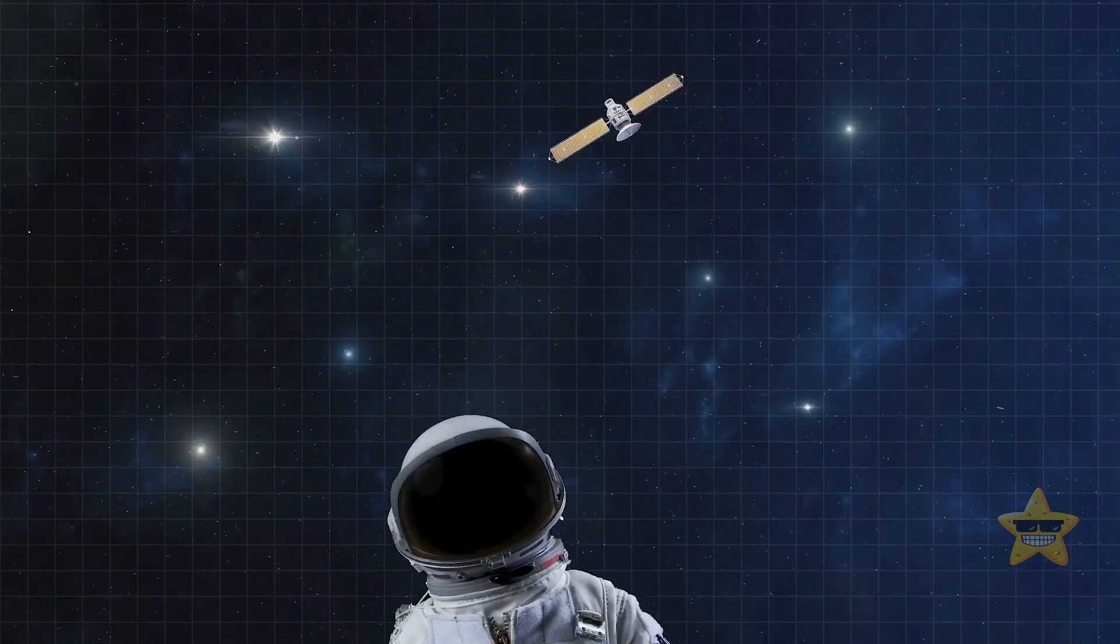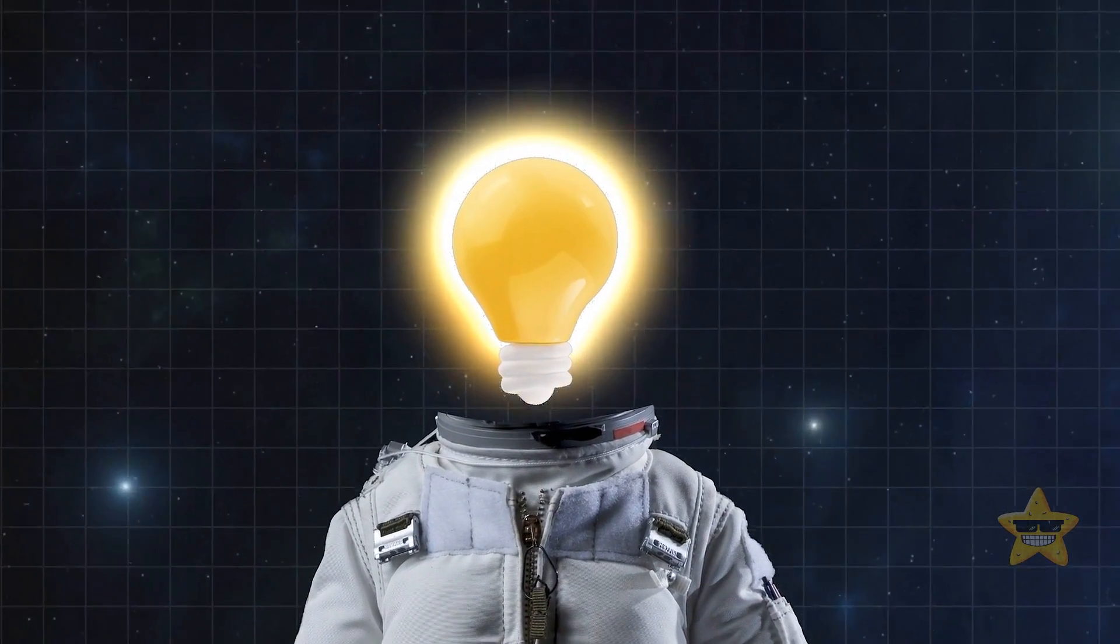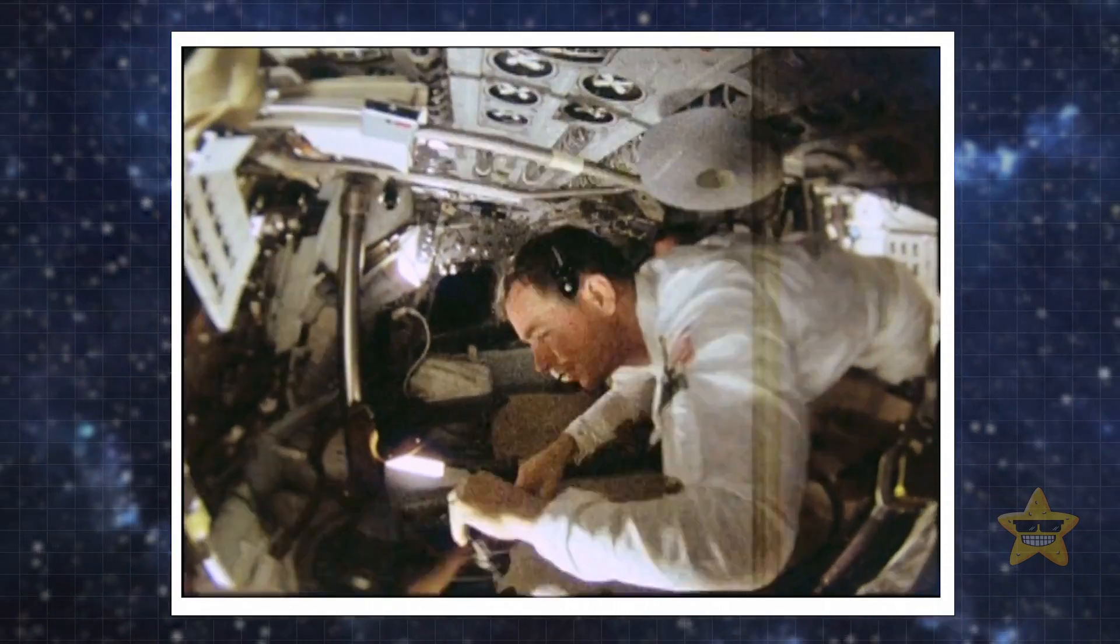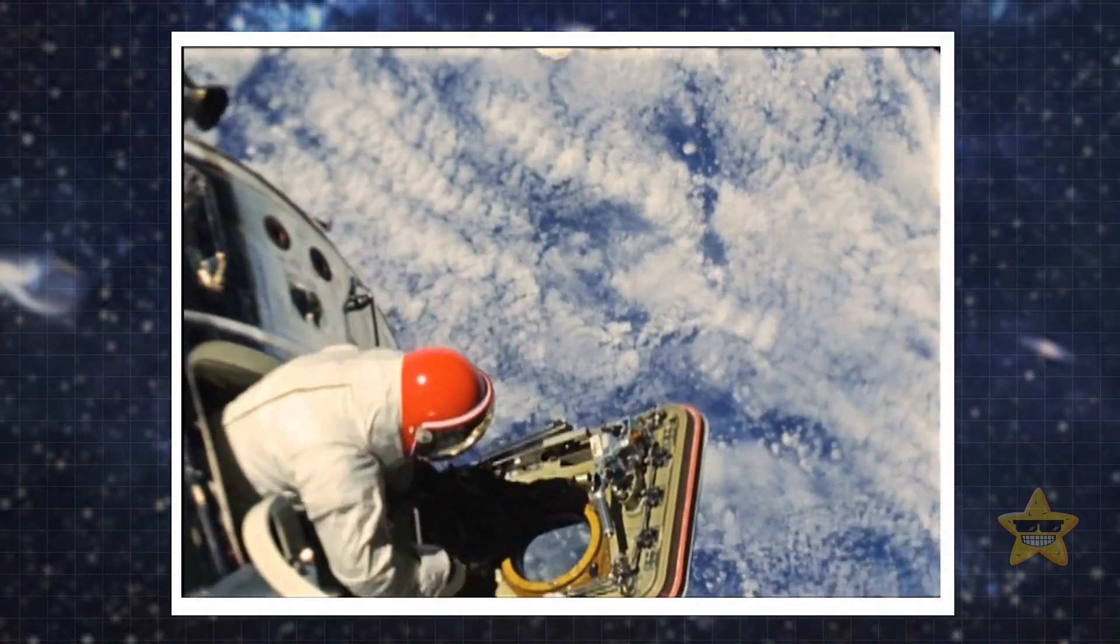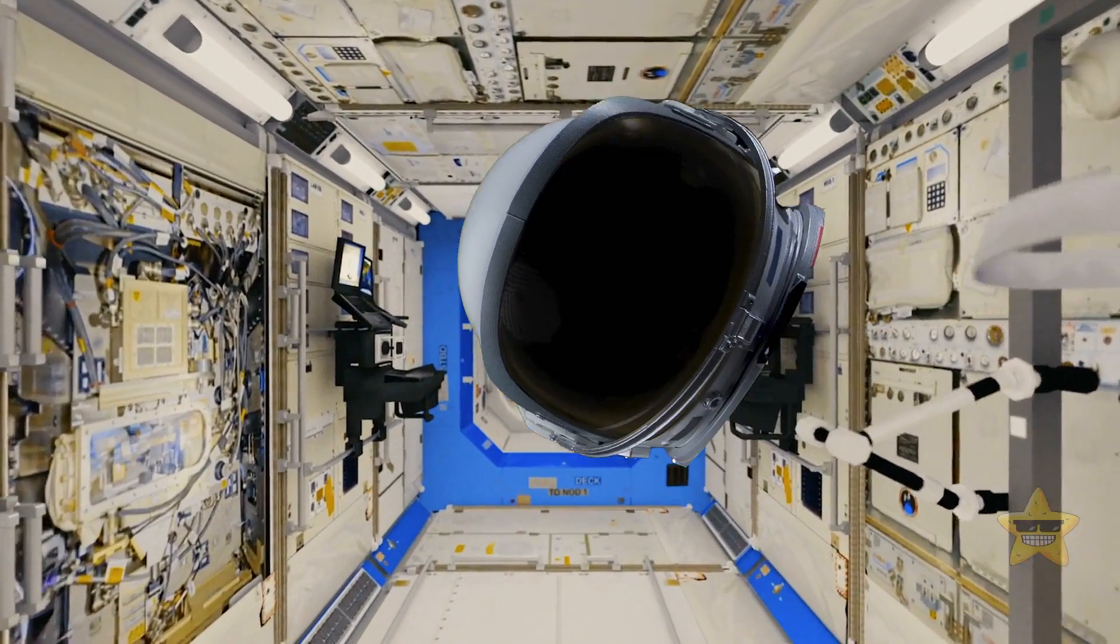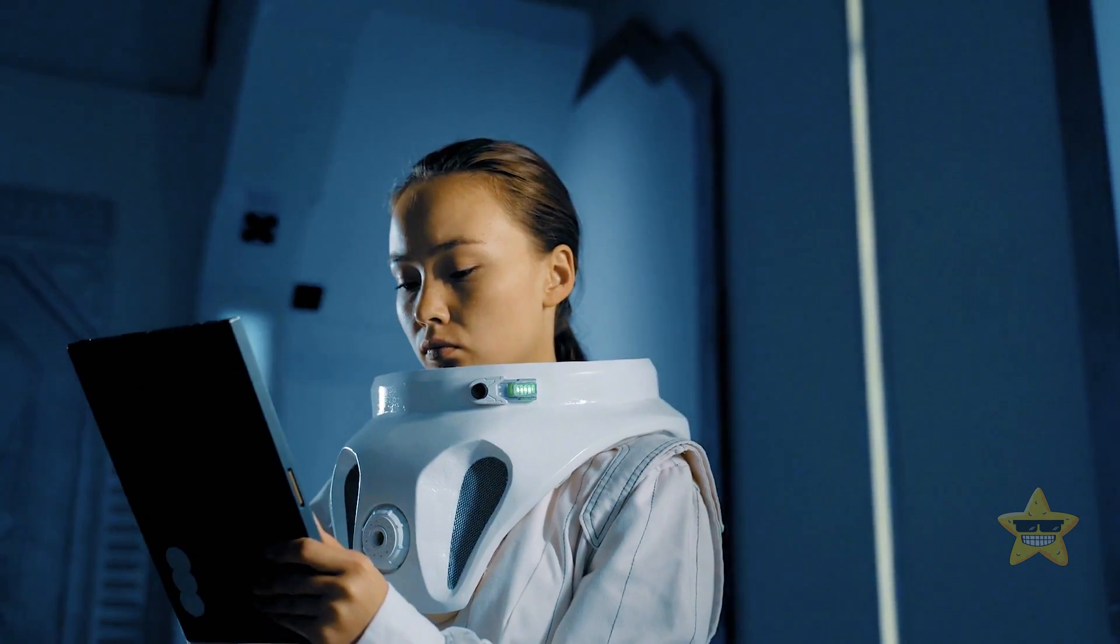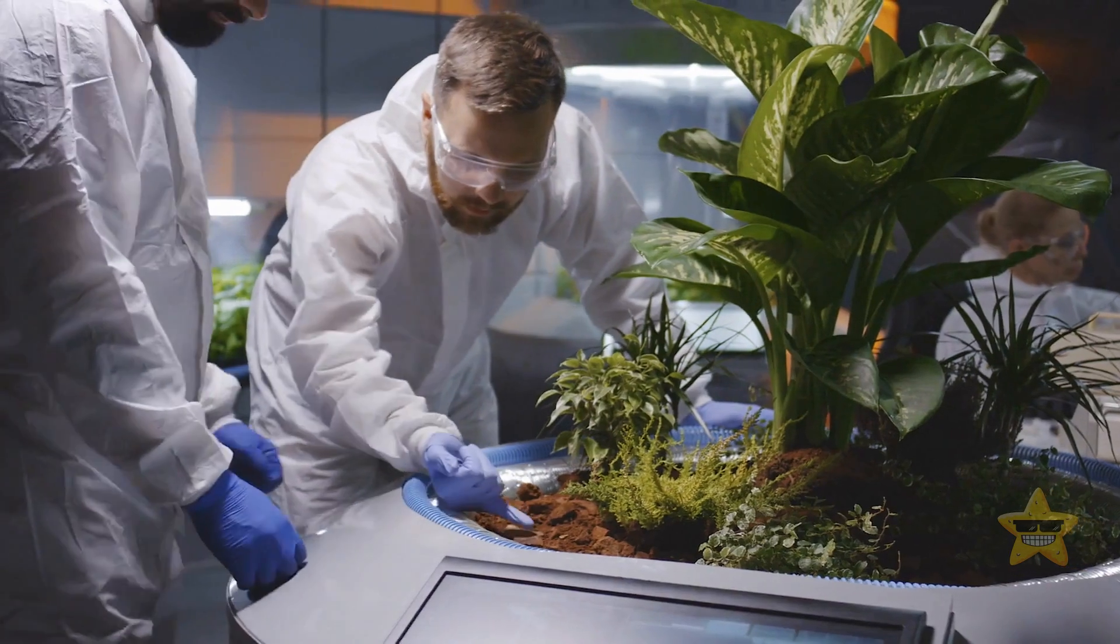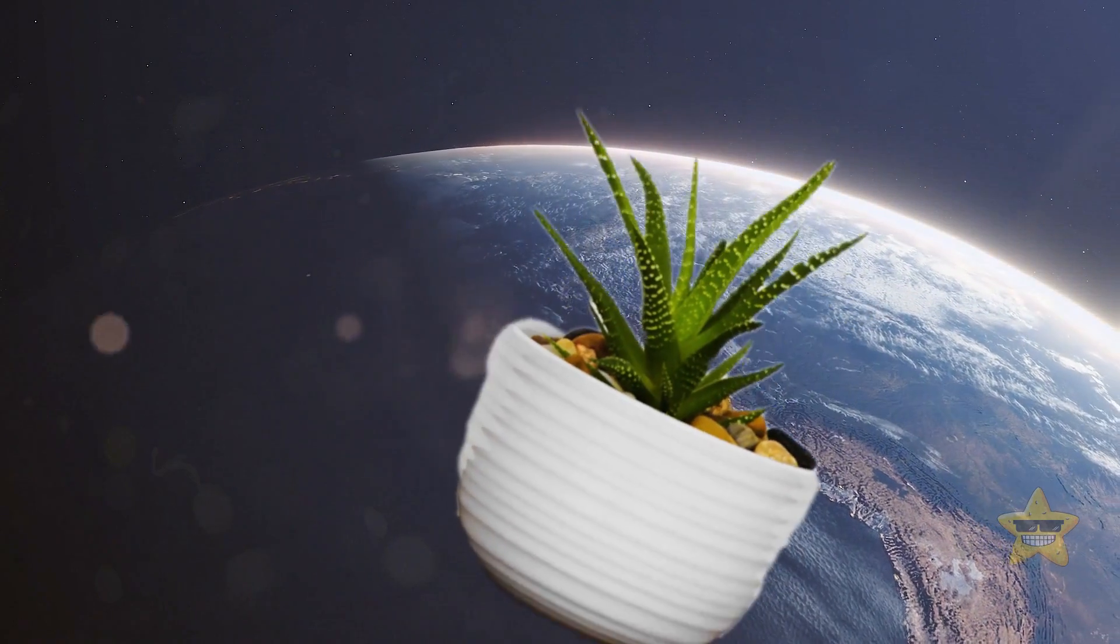If I were an astronaut and discovered that we could breathe in space, I would work with my crewmates and mission control to establish protocols and safety measures for operating in this newfound environment. Although breathable air would eliminate the need for spacesuits, other potential hazards might still exist, such as temperature extremes or radiation, which would require appropriate precautions. Then, I would examine if the air was abundant and sustainable. Plus, I would explore ways to utilize it for various purposes, such as oxygen generation, atmosphere regulation in spacecraft, or even potential fuel production for long-duration missions. And what would you do in such a situation?